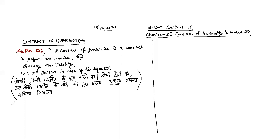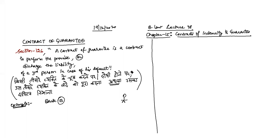Let's take an example. You go to the bank to take a loan. You are A, and C is there too. The bank says it will give you a loan but asks for a guarantee. C says, okay, I will give you a guarantee.